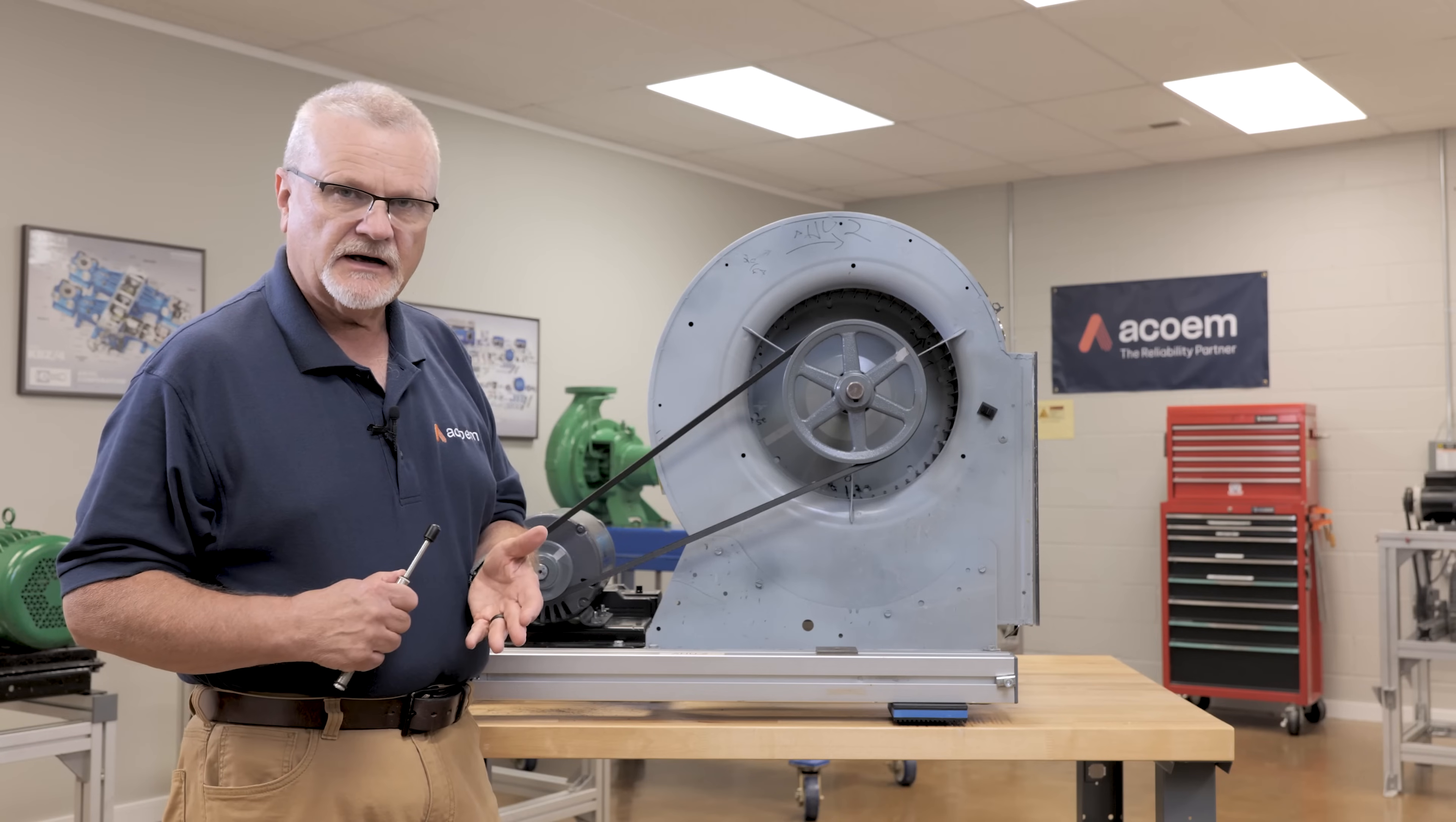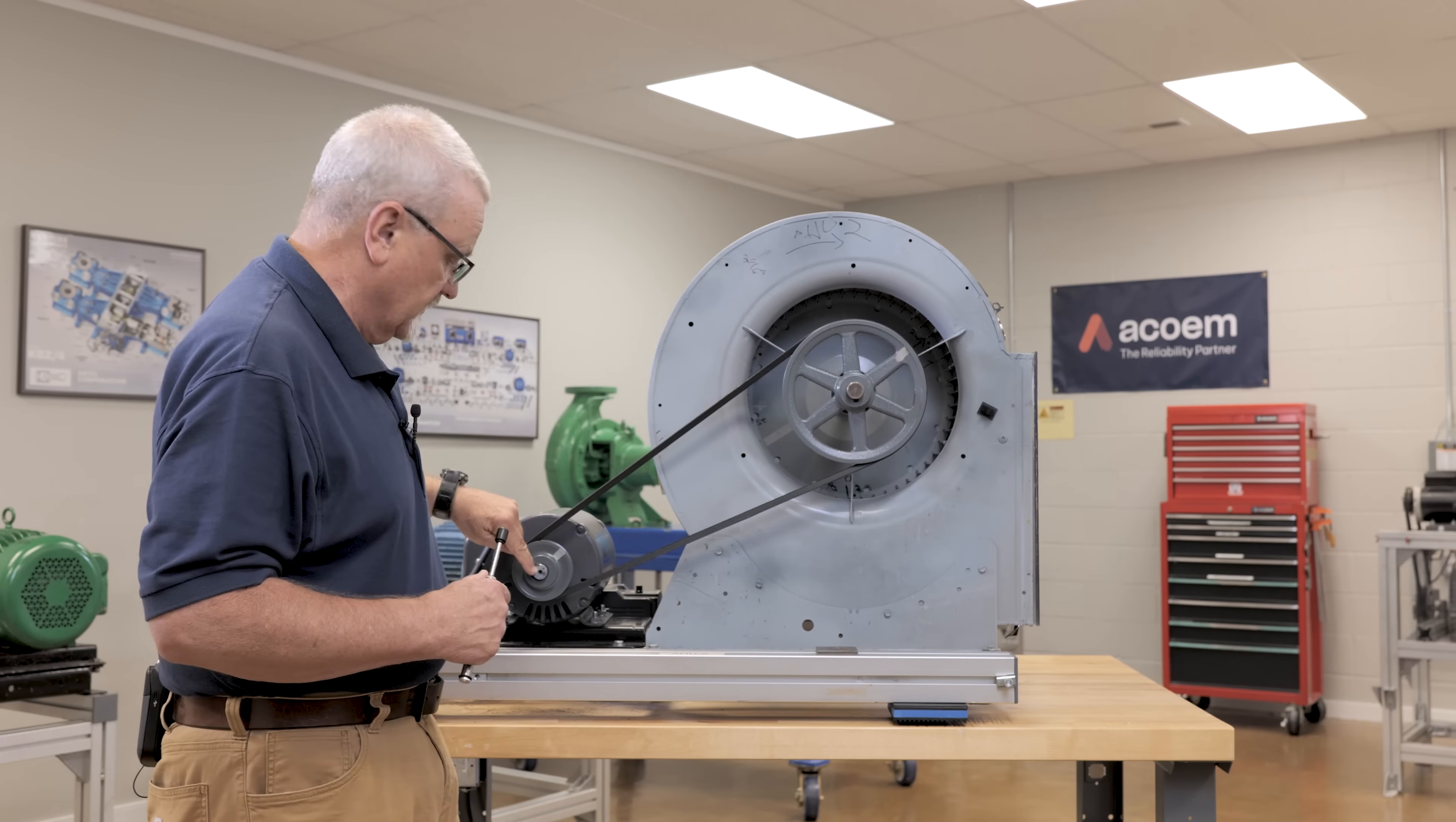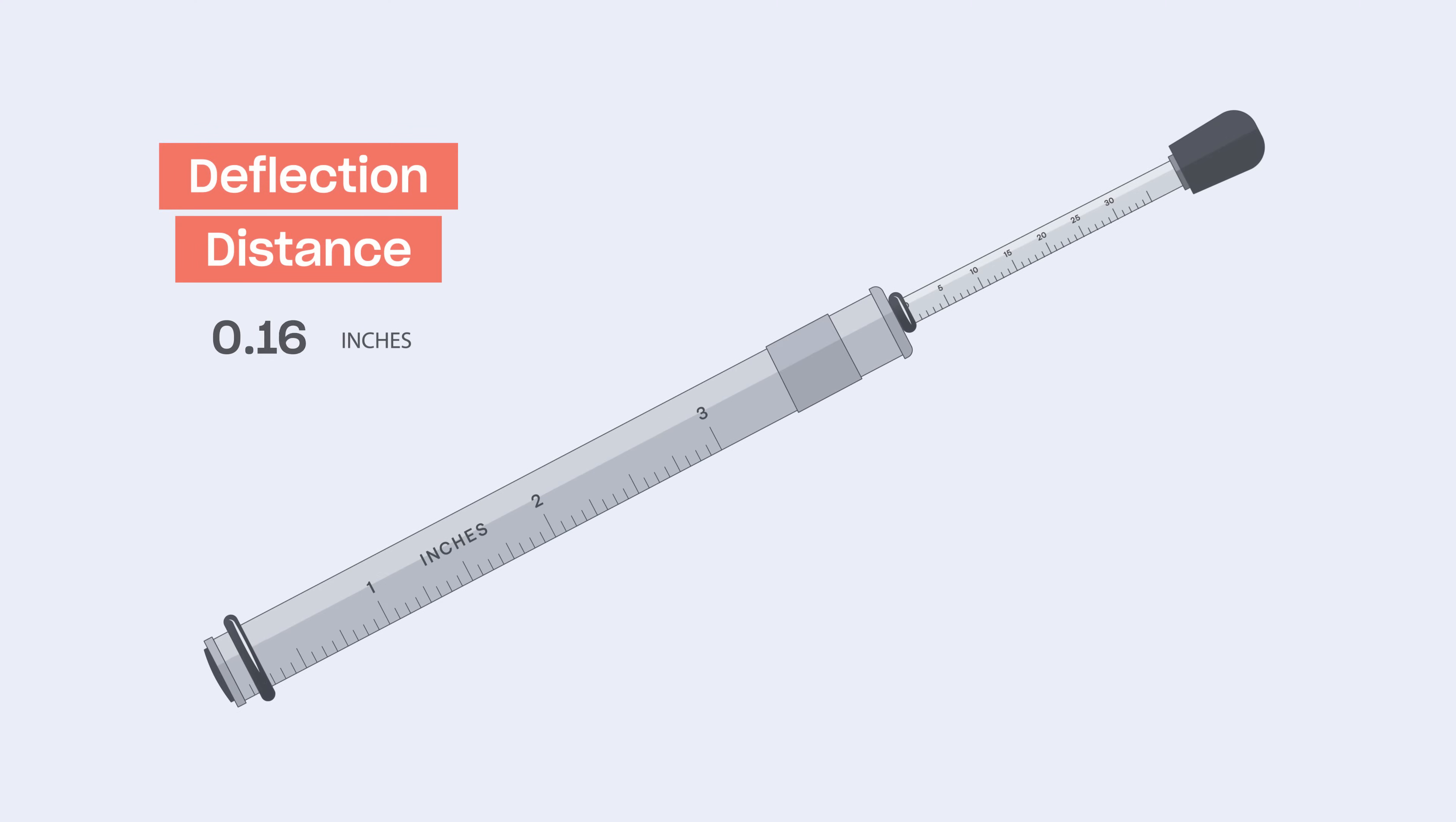So I've already done the calculations and I've found out that for this belt, it's an A-size belt with shiv diameters the size they are, the center span distance from shaft to shaft, and the horsepower of the motor tells me that I need .38 inches of deflection, let's just say a third of an inch or three-eighths of an inch, and I also need 2.21 pounds or about two pounds of force.